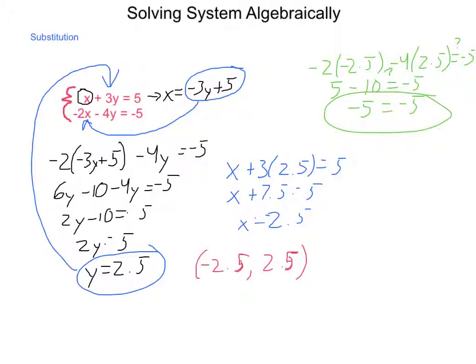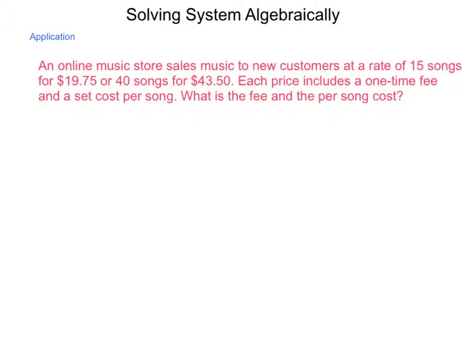Let's see how this could apply in real life. An online music store sells music to new customers at a rate of 15 songs for $19.75 or 40 songs for $43.50. Each price includes a one-time fee and a set cost per song. What is the fee and what is that cost? We need to take this information and write it out into a system of equations.